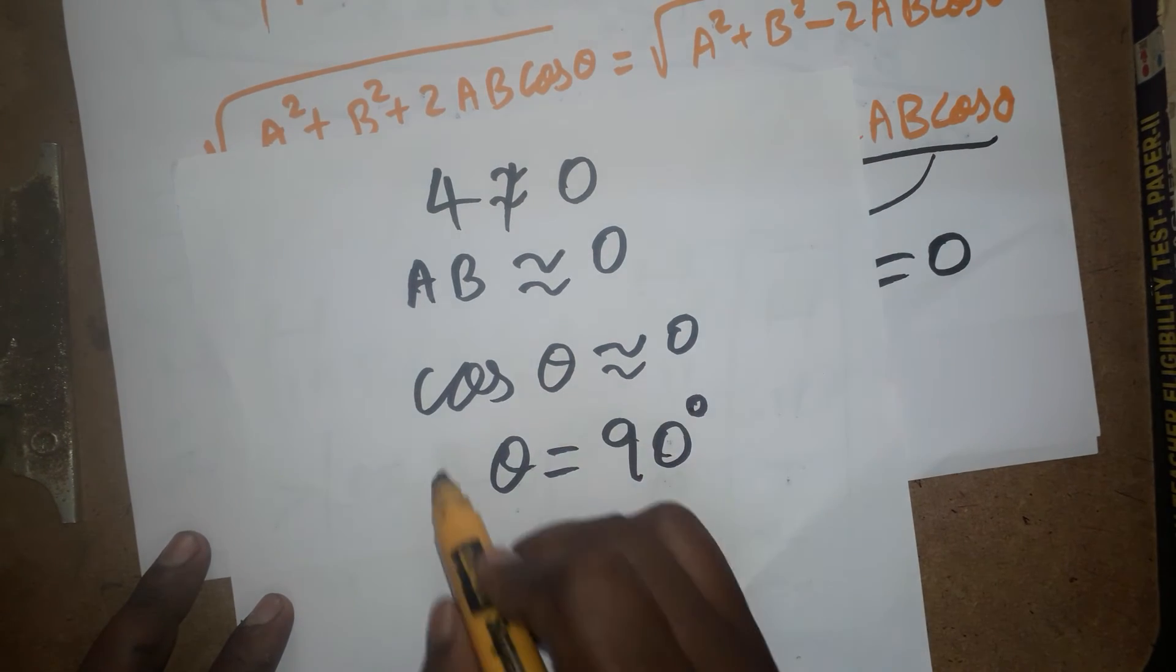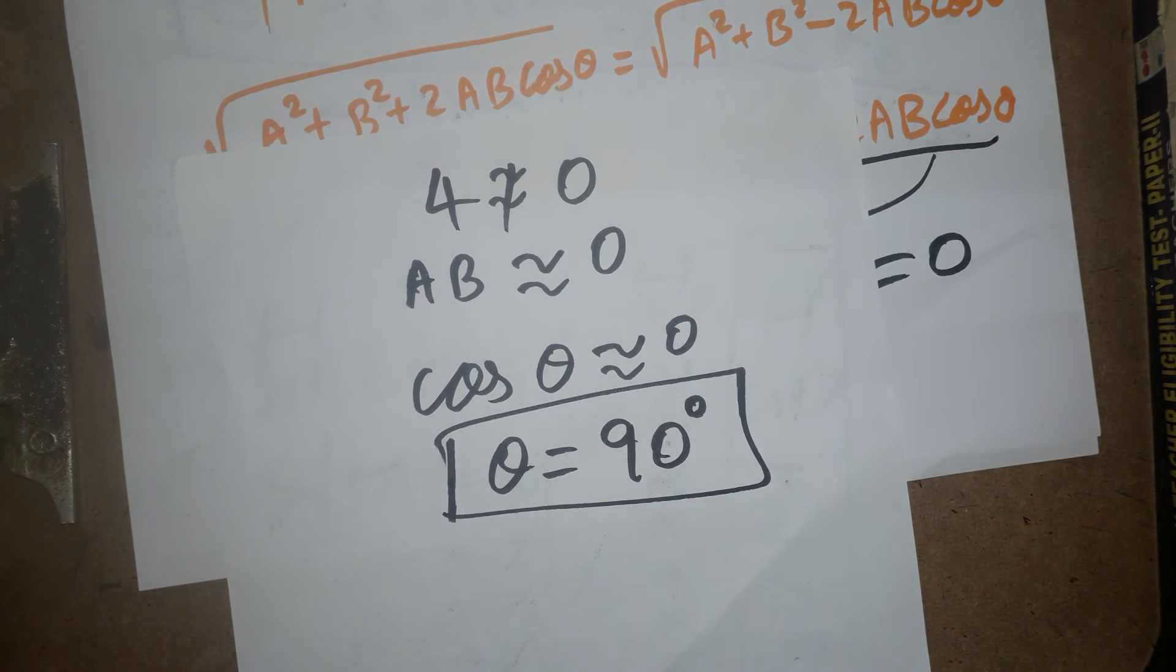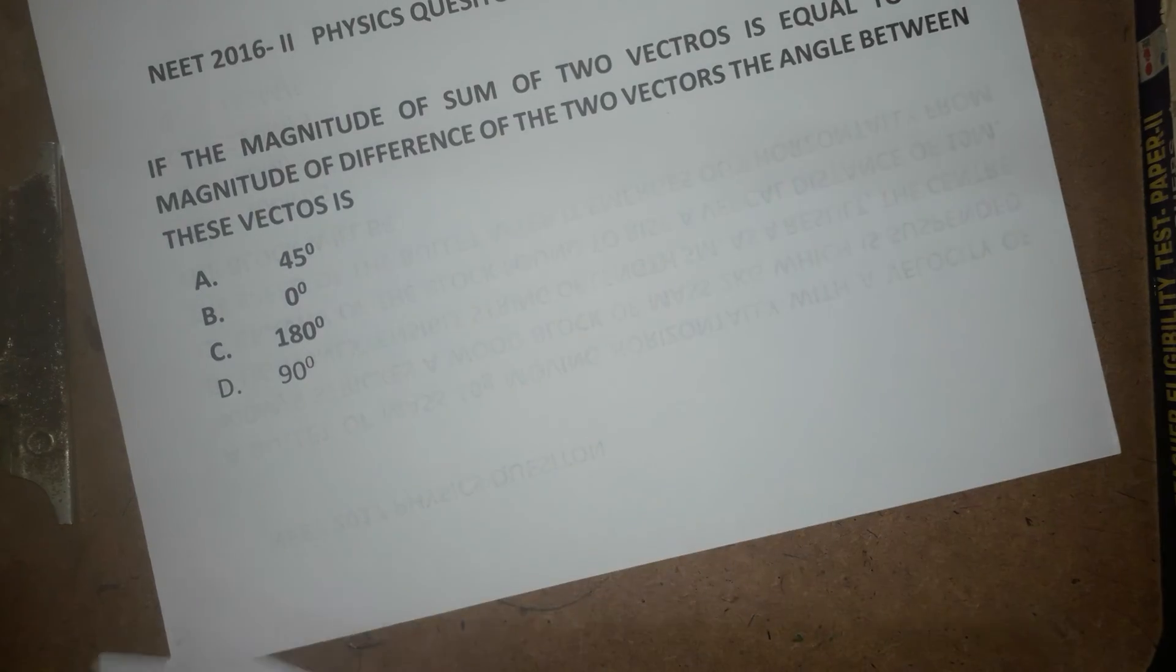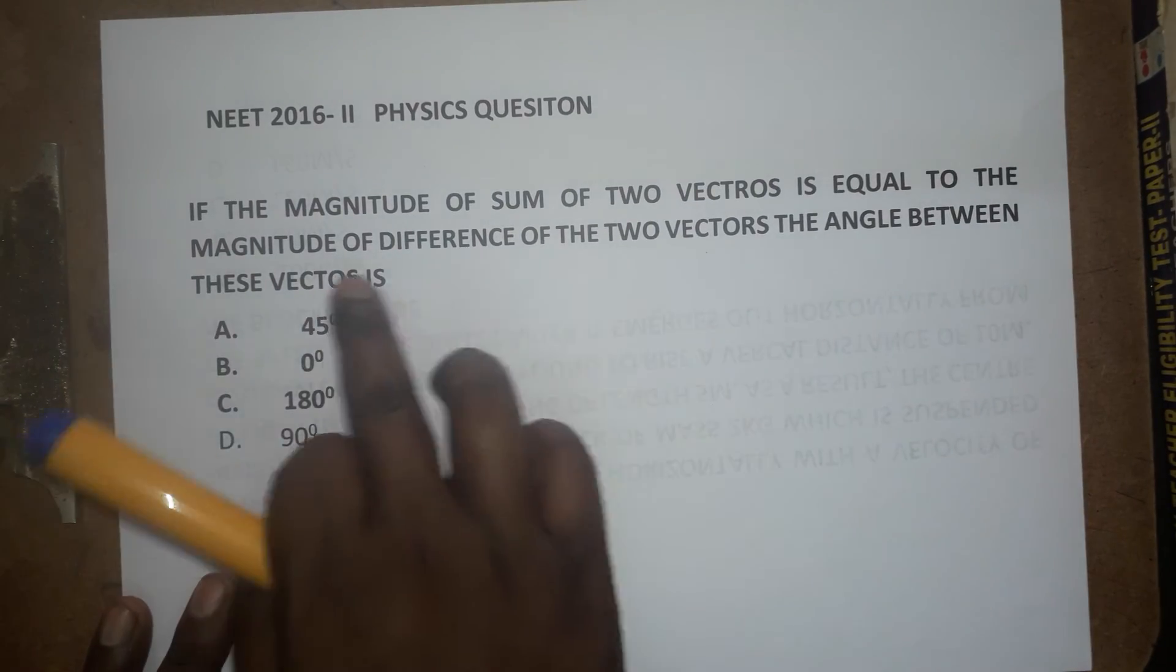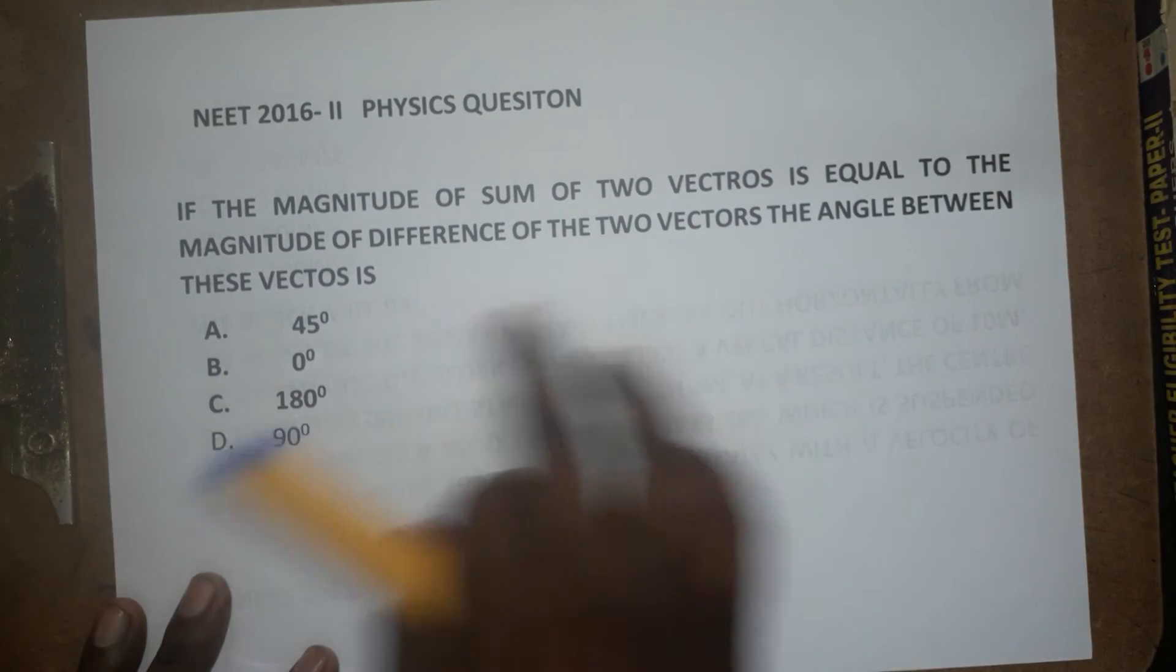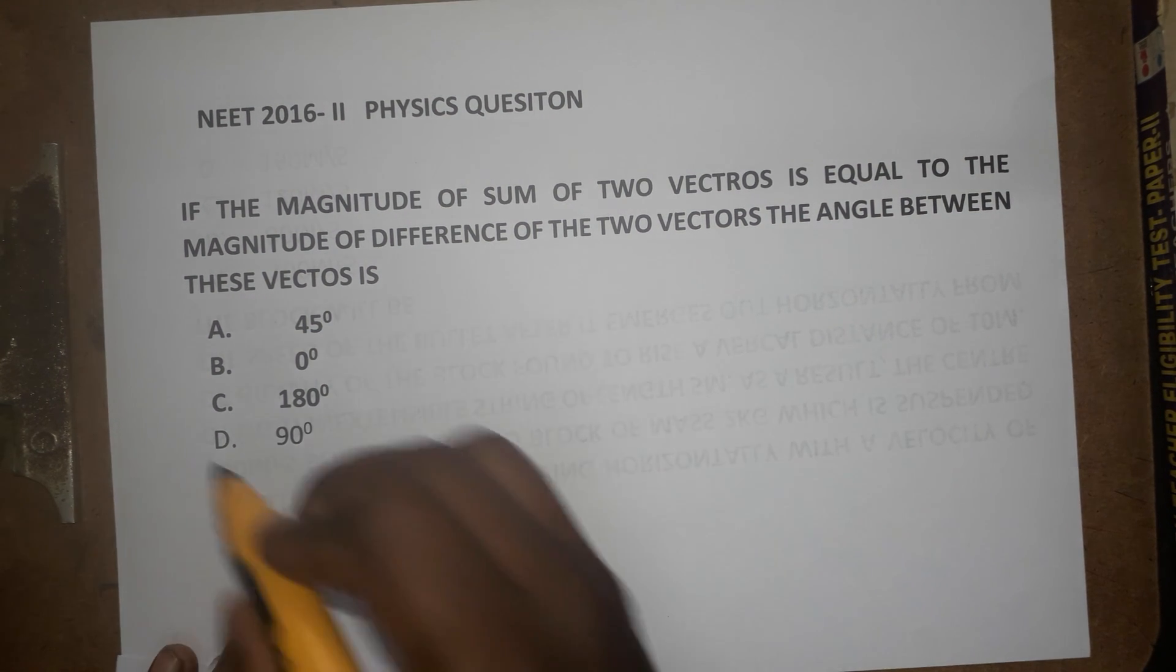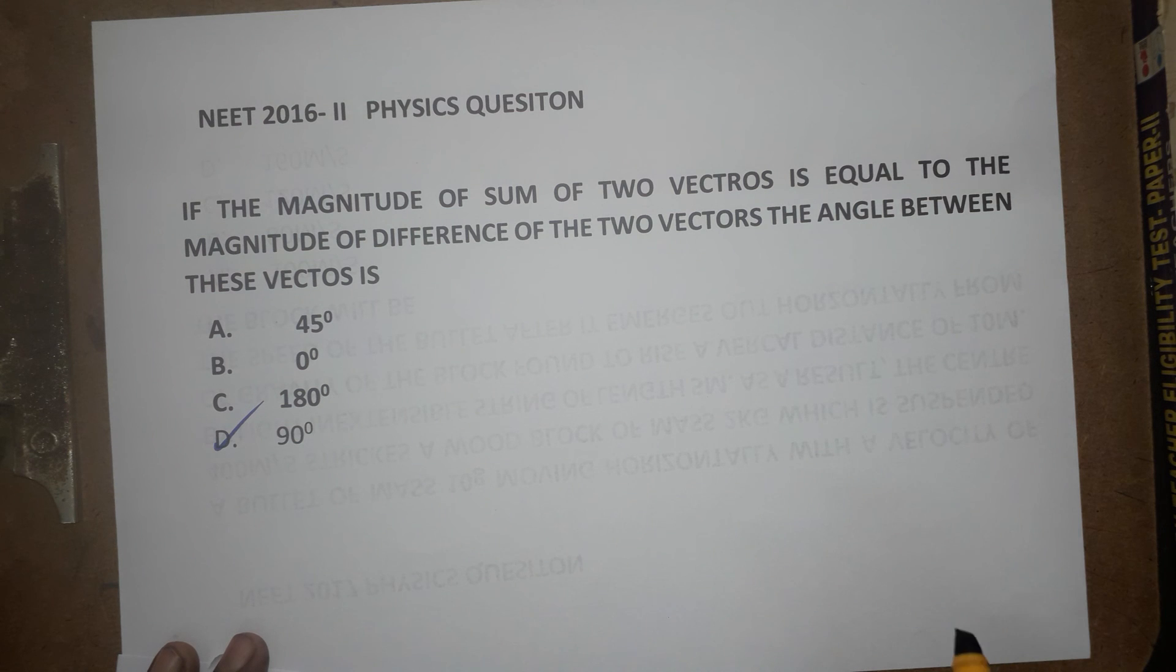Very simple logic. So finally, the answer of this one, it is going to be 90 degrees. See here the question. So addition, sum of the two vectors and separation of two vectors, when it is in this condition, the angle is going to be 90 degrees. Finally, we got the answer as 90 degrees.